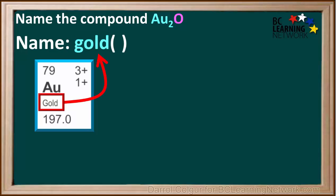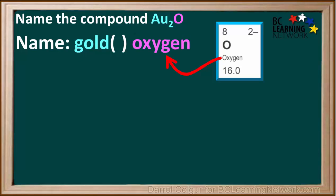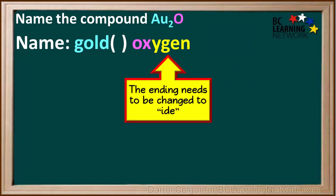We know that the name of the metal is gold and it needs a roman numeral. And we know that the name of the non-metal is oxygen. But because this is a binary compound, the ending of the non-metal needs to be changed to ide.